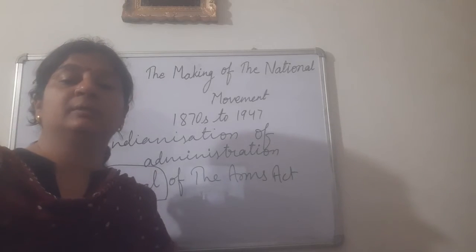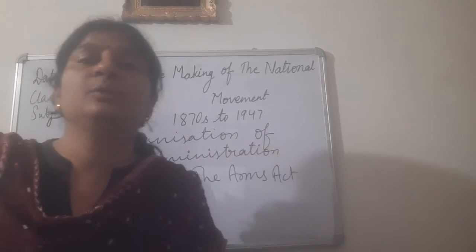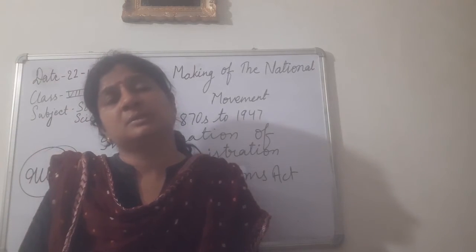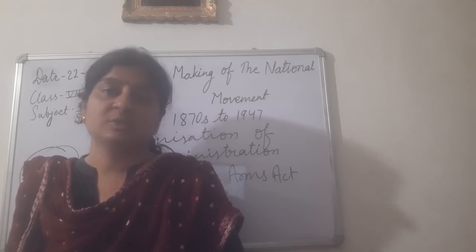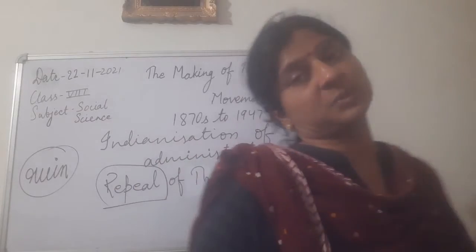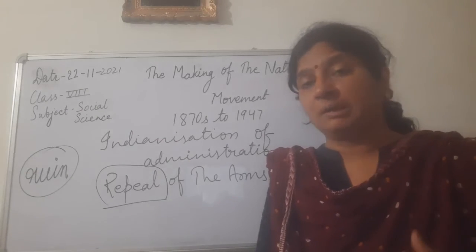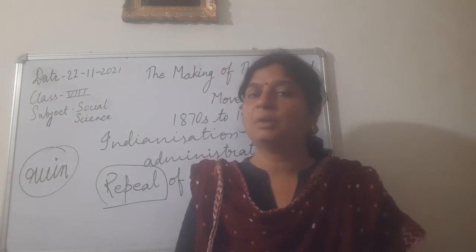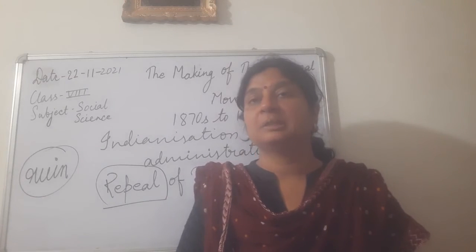Slowly within Congress, some leaders started to raise questions about the style of working of Congress. They were not liking the moderate way — moderate in its objectives, moderate in its methods. A group started to arise from the 1890s itself, which did not like the objectives and methods of the moderate leaders.